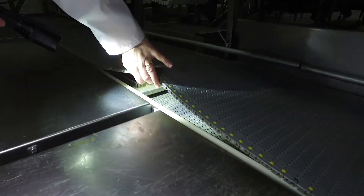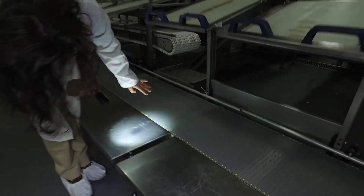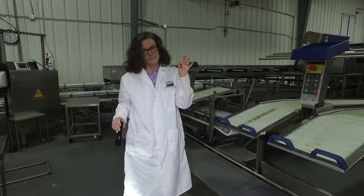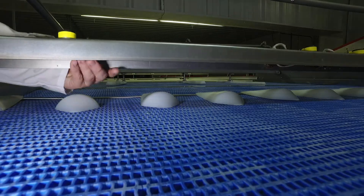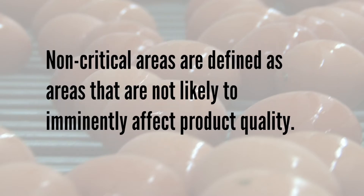So what is organoleptic inspection? Organoleptic inspection assessments include sight, smell, and touch. However, microbial growth will not always be seen, smelled, or felt. Critical areas are defined as equipment with potential surface contact with eggs or that come in contact with wash water or air blown to dry the eggs. Non-critical areas are defined as areas that are not likely to imminently affect product quality. Non-critical does not mean it is not important. Non-critical unsatisfactory conditions should be addressed after the processing line has been started, unless unable to safely do so during processing.